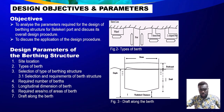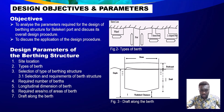Now let's look at the objectives. We only have two objectives. First is to analyze the design parameters of the berthing structure and discuss its overall design procedure. Objective two is to discuss the application of the design procedure. However, before any actual design of a berthing or jetty structure begins, one must consider the following factors, which we call the design parameters.